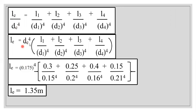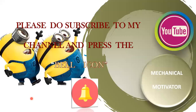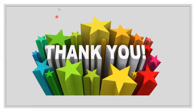Using the formula we derived, we cross-multiply de⁴ and substitute all known values for lengths and diameters. After substituting everything, we get the length of the torsionally equivalent shaft as 1.35 meters. If you have any doubts, type in the comment section. Please subscribe to Mechanical Motivator and press the bell icon to receive all uploaded videos. Thank you for watching — have a great day.